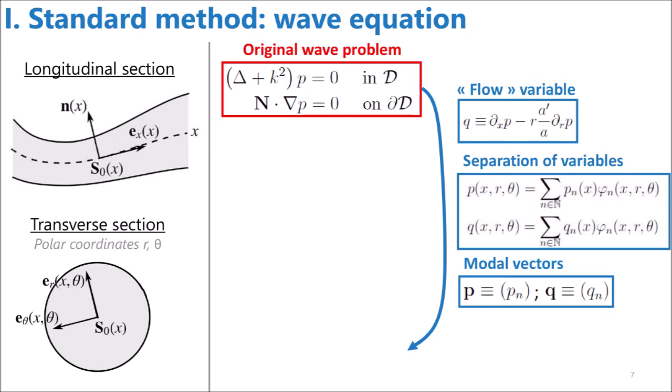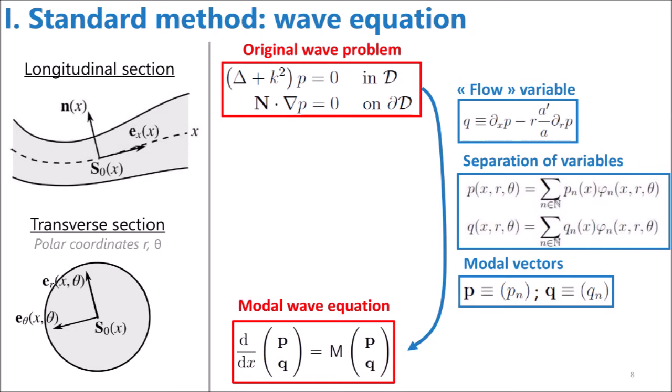Here it is denoted q. Also, we express p and q as combinations of transverse functions whose amplitudes change over x, and we put all those amplitudes in modal vectors. Finally, we can project the whole problem onto the set of transverse functions, which yields the modal wave equation, which is a 1D equation. The M-matrix you see is a matrix that depends on x and that is affected by the choice of the transverse functions and of the frequency.